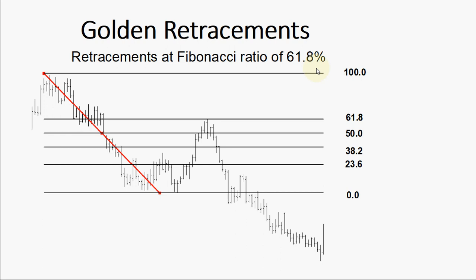Golden retracement. The key Fibonacci ratio of 61.8 — we have discussed it already. We call it golden because it is found by dividing one number in the series by the number that follows it. So we have price that declined from here down, and we put our Fibonacci tools. Where does the retracement stop? At exactly the 61.8 level. We call this the golden retracement level, and then price continues.